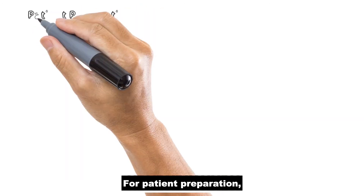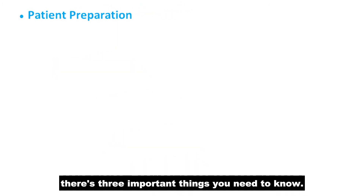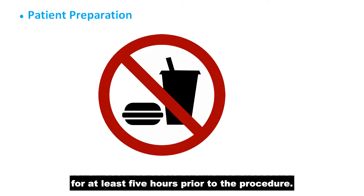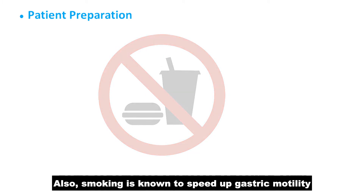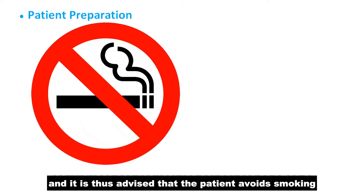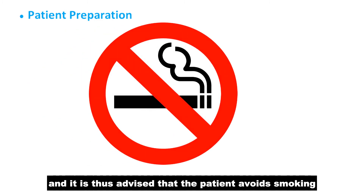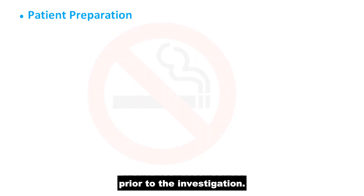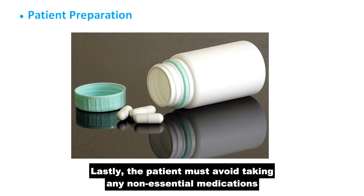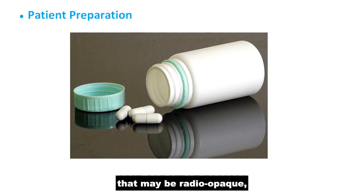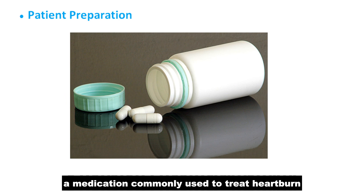For patient preparation, there are three important things you need to know. First, the patient should have no food or drink for at least five hours prior to the procedure. Also, smoking is known to speed up gastric motility, and it is thus advised that the patient avoid smoking prior to the investigation. Lastly, the patient must avoid taking any non-essential medications that may be radio-opaque. Examples include B-Smooth, a medication commonly used to treat heartburn.